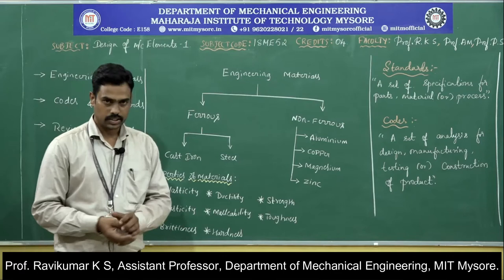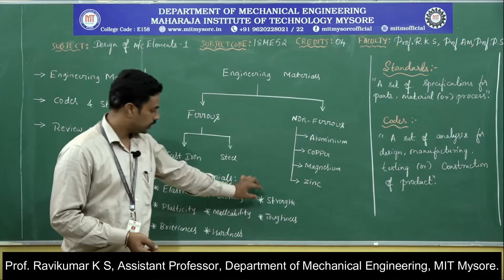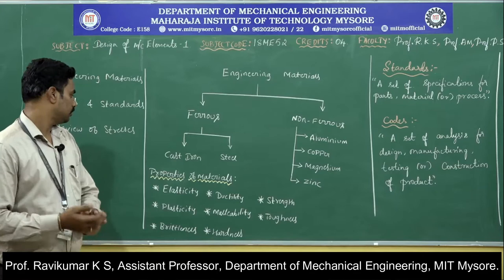Some of the properties we can discuss about engineering materials are elasticity, plasticity, brittleness, ductility, malleability, hardness, strength, and toughness. These are some of the engineering properties of materials.